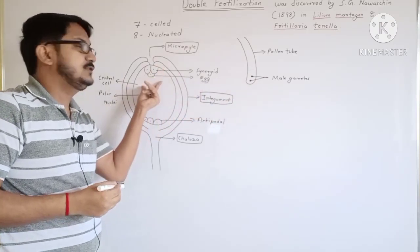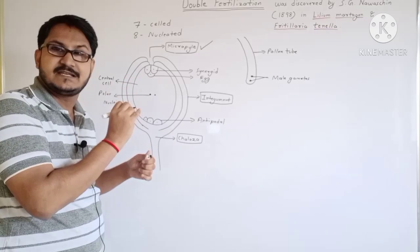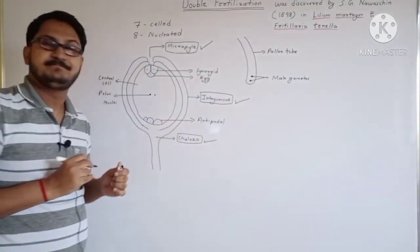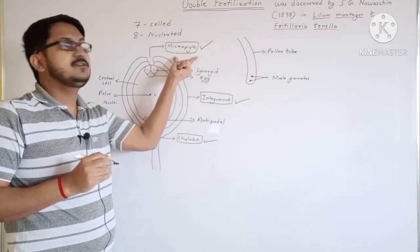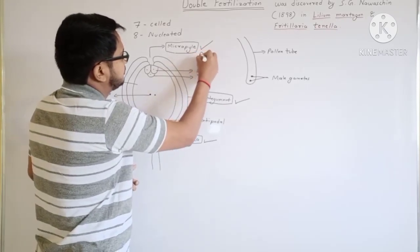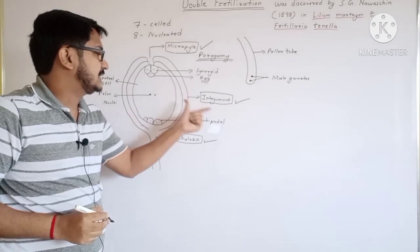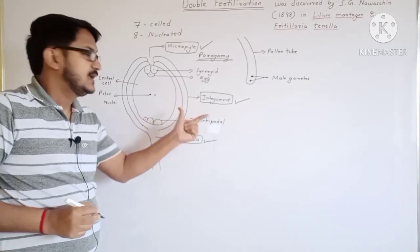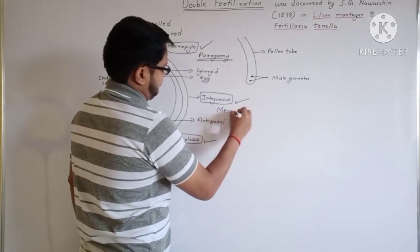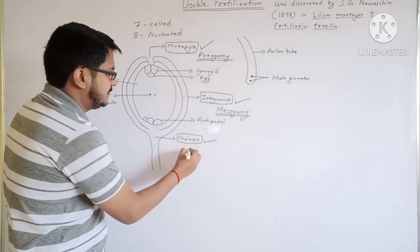The question is: from where does the pollen tube enter the embryo sac? Generally, it enters through the micropylar end — this is known as porogamy. We have two more options: when the pollen tube enters through the integument, it is known as mesogamy, and when it enters through the chalazal end, it is termed as chalazogamy.